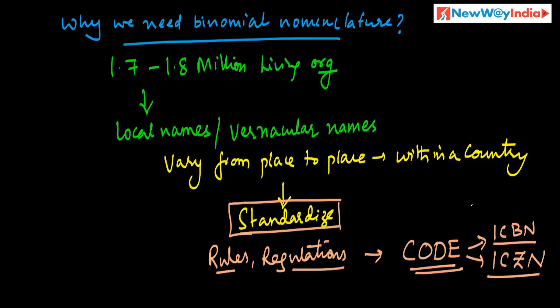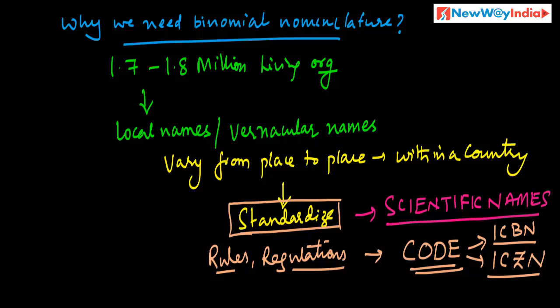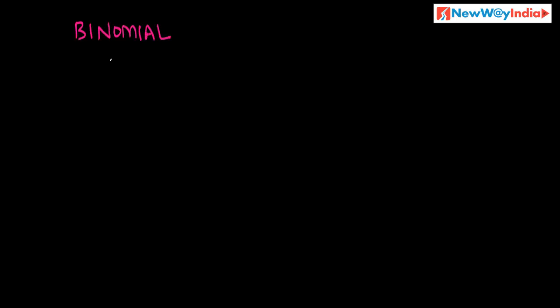So there is a code, there is a system, there are rules and regulations to name organisms. That is called scientific names. That scientific name is called binomial nomenclature.